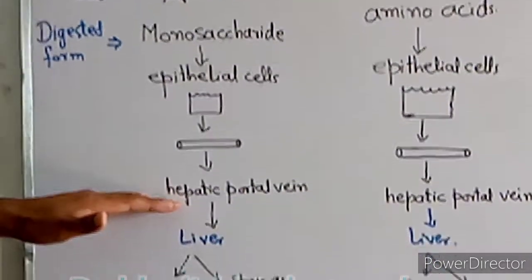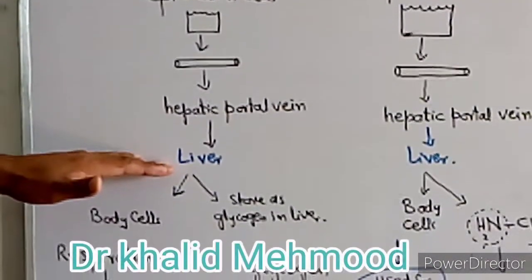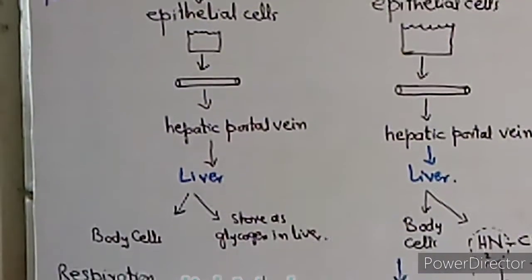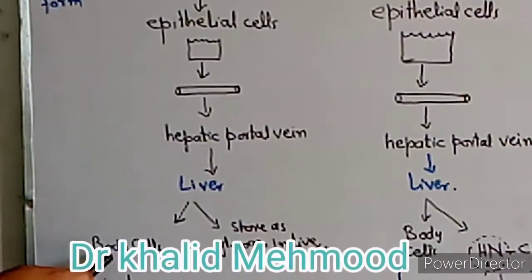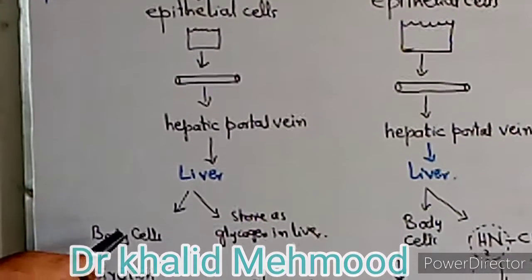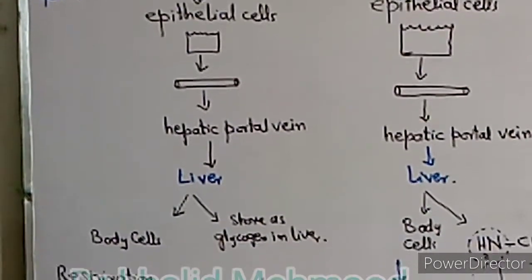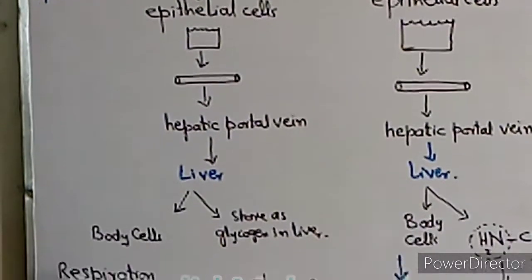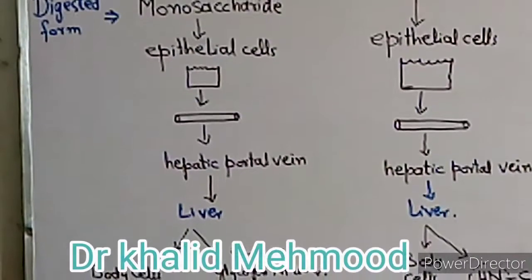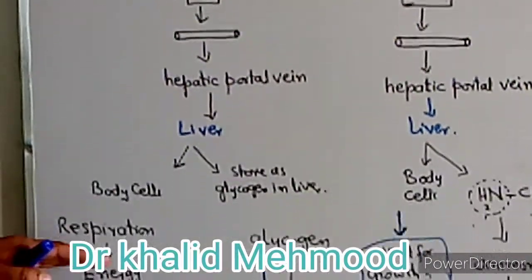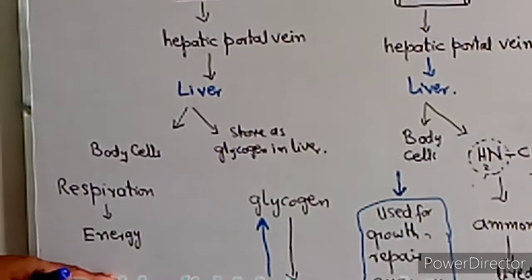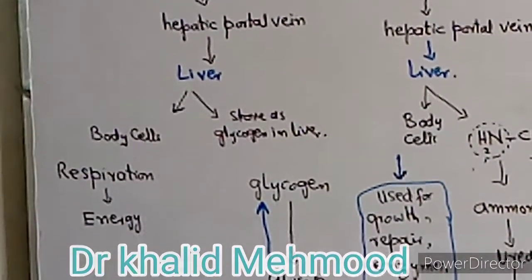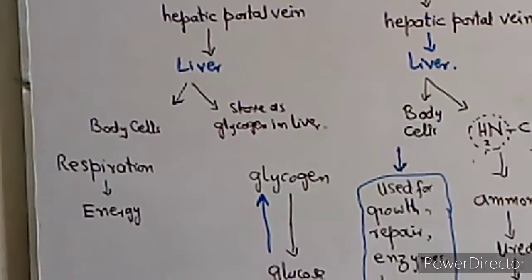From the epithelial cells, the monosaccharides will appear in the blood and travel to the liver. The liver will then be involved in the process of respiration, and the product will also appear as energy, which can be used in different processes and mechanisms.